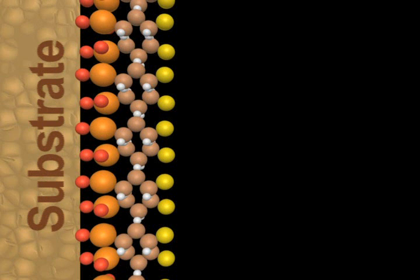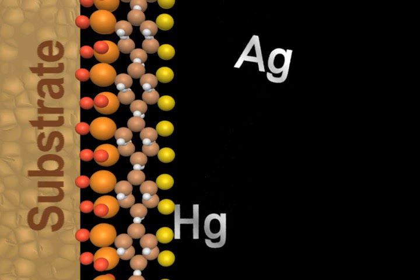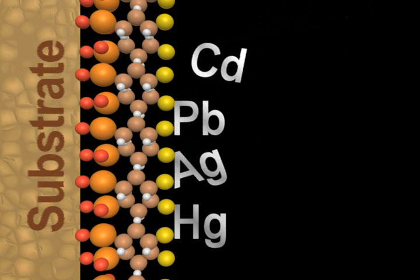For instance, substrate surfaces functionalized with thiol ligand, thiol-SAMs, can very selectively bind mercury and the related family of toxic elements such as silver, cadmium and lead.